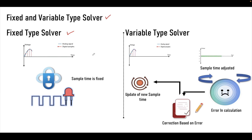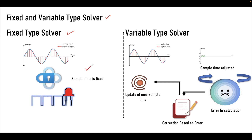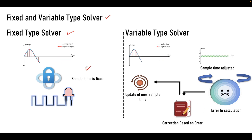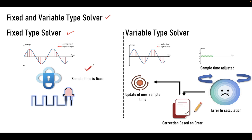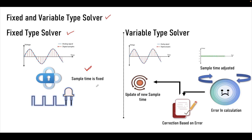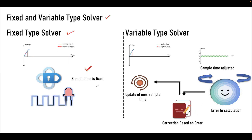The sample time will be fixed before starting the simulation and that will stay the same throughout the simulation. This is called fixed type of solver. When you go for the code generation part, you will be using a fixed type solver, because there is a clock frequency that is assigned for every hardware and that will always be fixed. So when you go for code generation you need to set your model setting to fixed type solver.